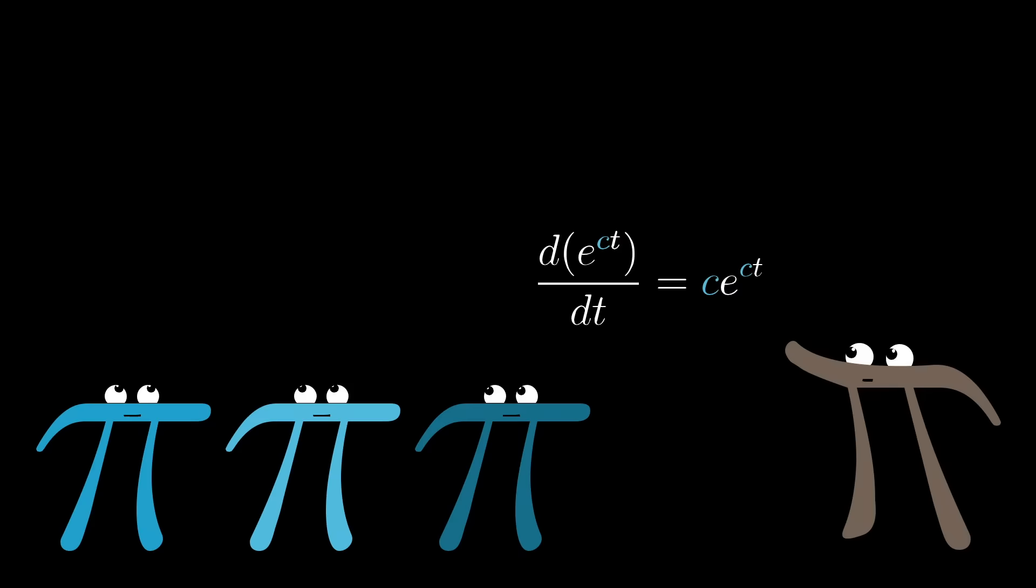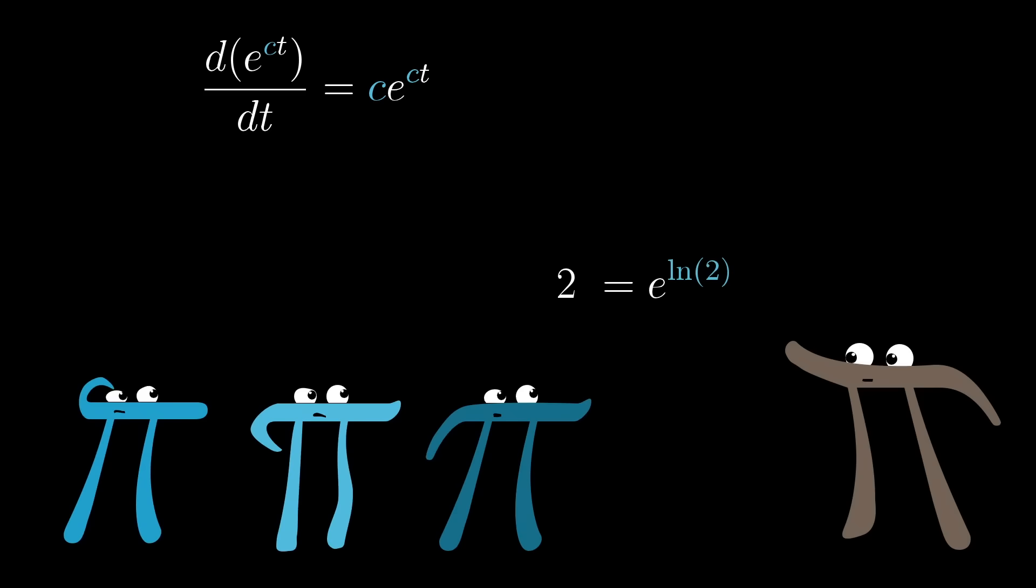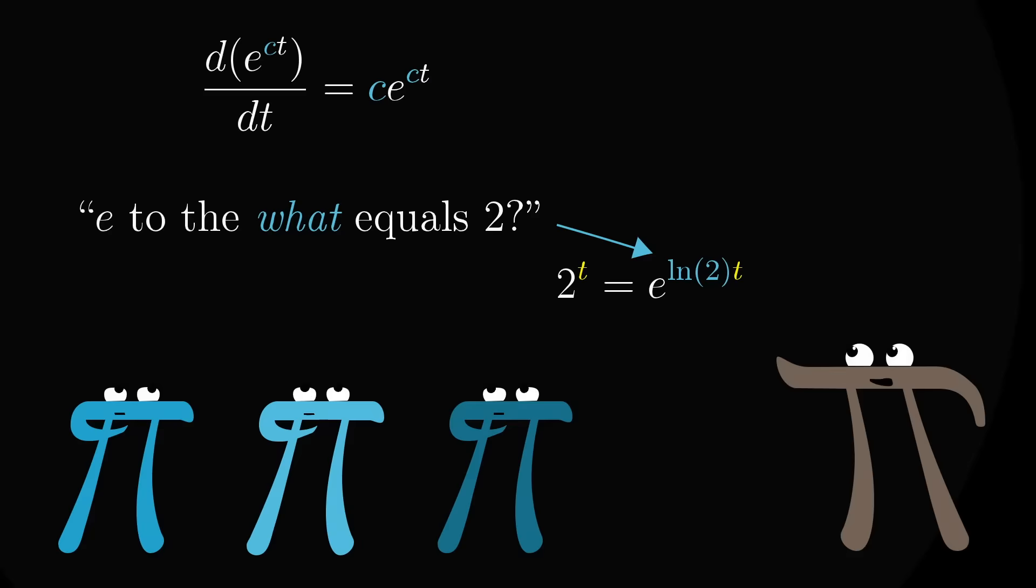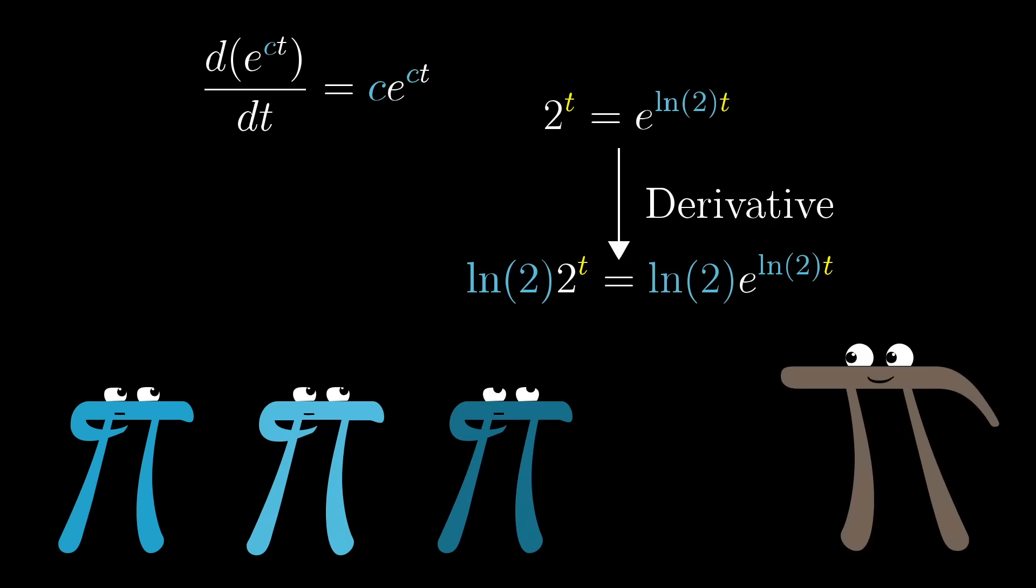The number 2 can also be written as e to the natural log of 2. There's nothing fancy here. This is just the definition of the natural log. It asks the question, e to the what equals 2? So the function 2 to the t is the same as the function e to the power of the natural log of 2 times t. And from what we just saw, combining the facts that e to the t is its own derivative with the chain rule, the derivative of this function is proportional to itself, with a proportionality constant equal to the natural log of 2. And indeed, if you go plug in the natural log of 2 to a calculator, you'll find that it's 0.6931, the mystery constant that we ran into earlier.